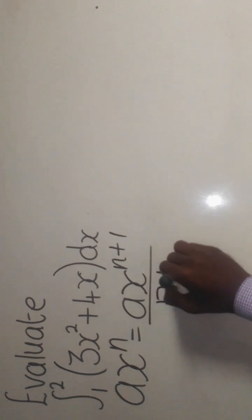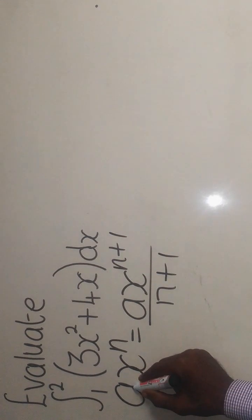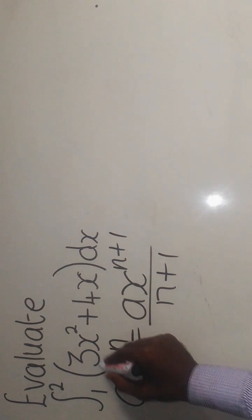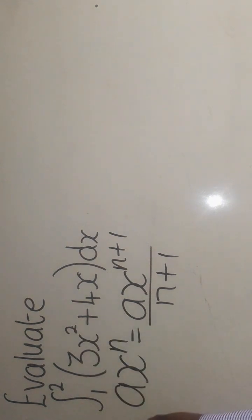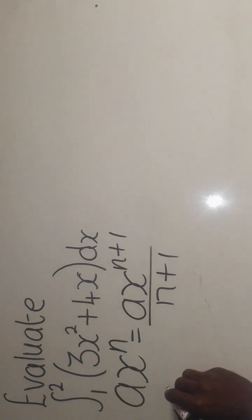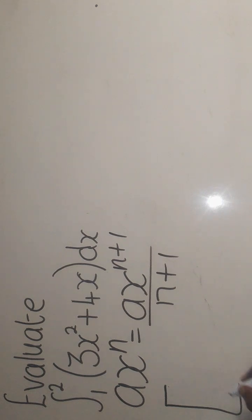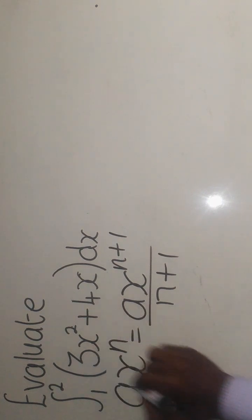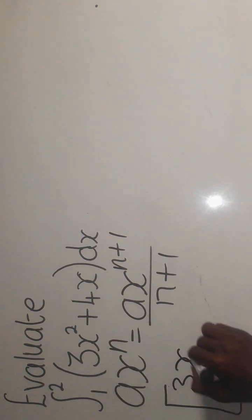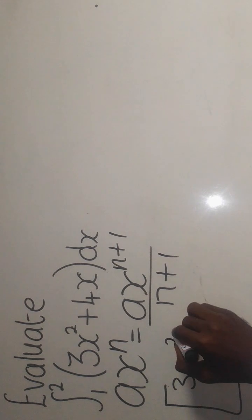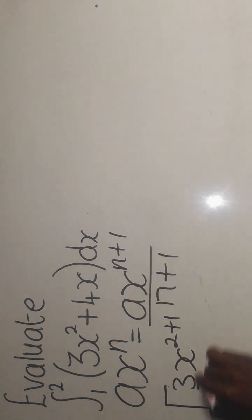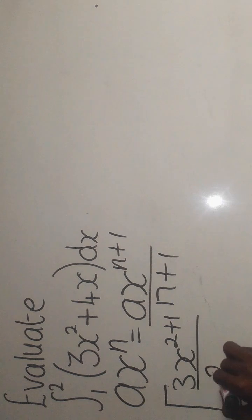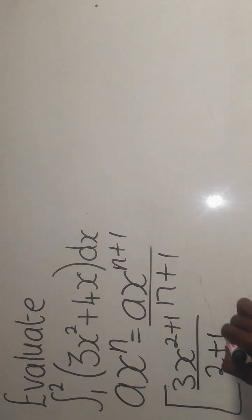It will be changed into this form here. A here simply means 3, X is X, and it simply means the power. So let's start. Following the formula, this will be 3X to the power 2 plus 1, over 2 plus 1 down here.